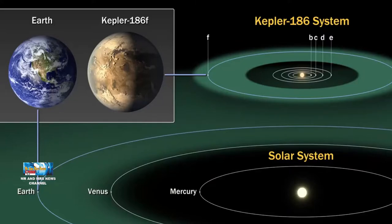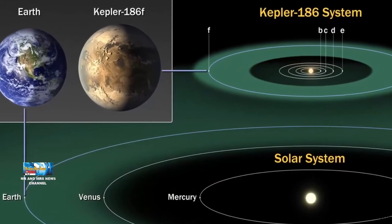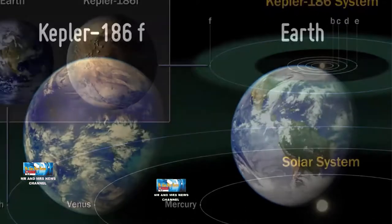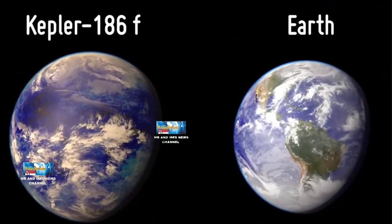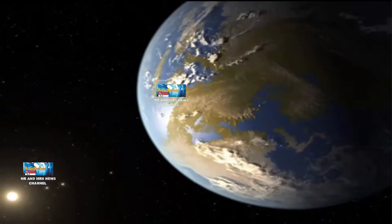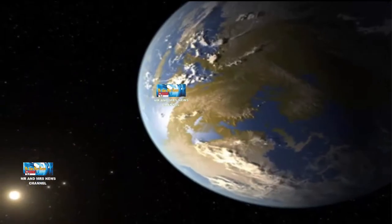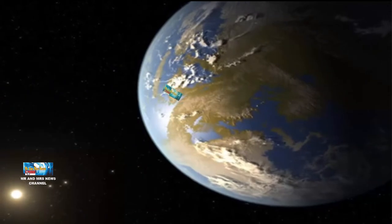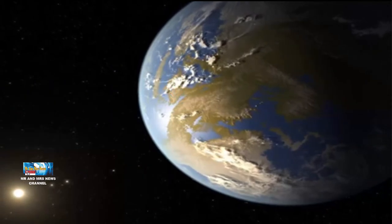Ini berarti planet yang hanya sedikit lebih besar dari bumi ini berada di bagian sistem bintangnya di mana air cair bisa ada di permukaan planet. Para astronom telah menemukan planet lain di zona layak huni bintangnya mereka, tetapi planet seukuran Kepler-186F baru pertama kali ditemukan di zona layak huni bintangnya.